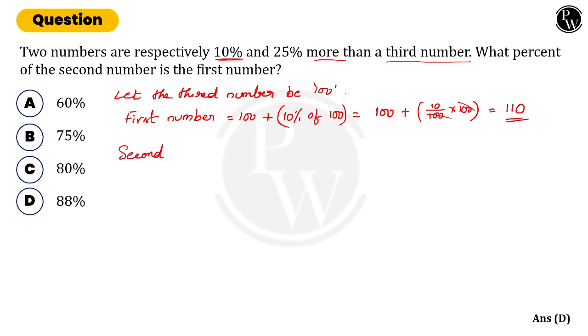Then what is the second number? The second number will be 100 plus 25% of 100. So 100 plus 25 divided by 100 into 100. Then 100, 100 cancel. 100 plus 25 is 125. That is the second number.